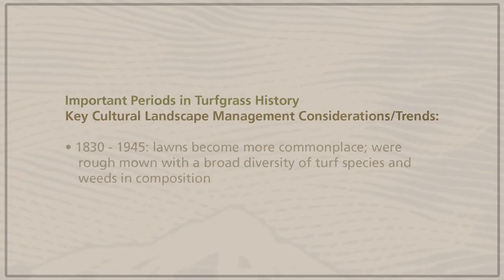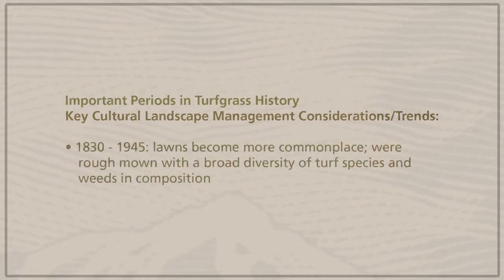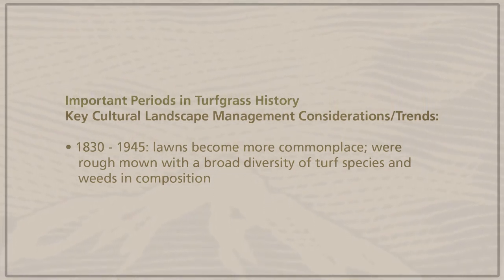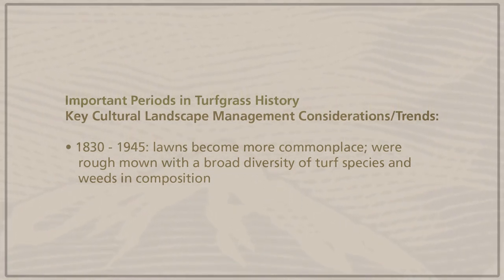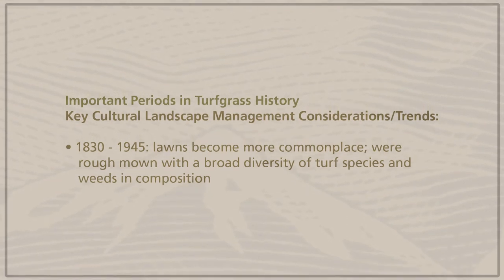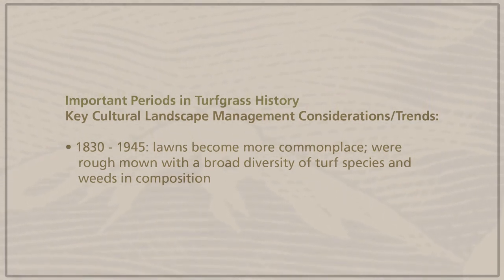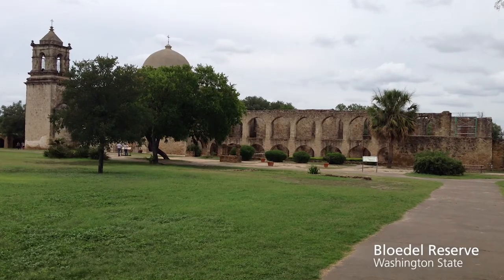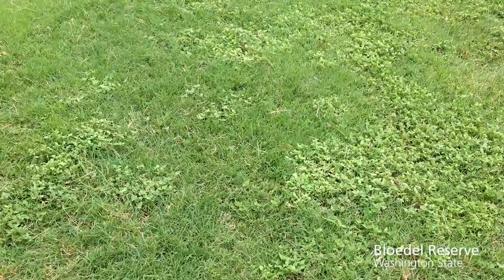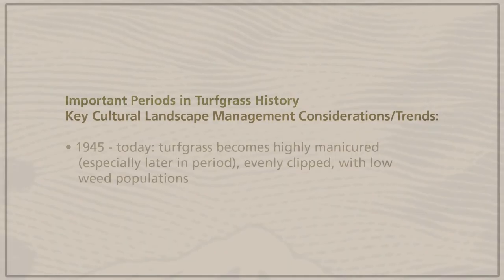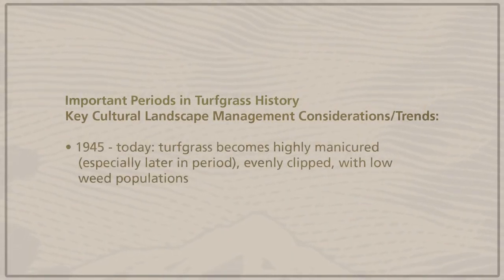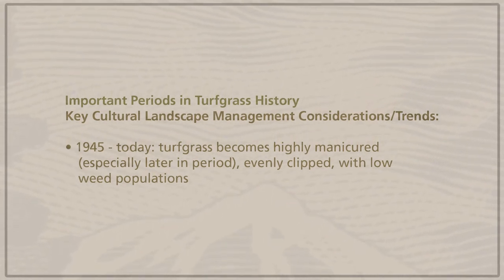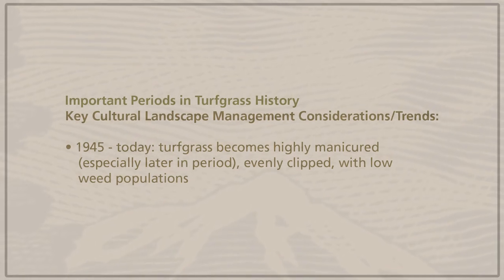Between 1830 and 1945, lawns became more commonplace and started to enter into these properties, but they were probably more roughly mown with a broad diversity of turf species and weeds in their composition. And from 1945 to today, turf grasses became highly manicured, especially later in the period, evenly clipped with low weed populations.